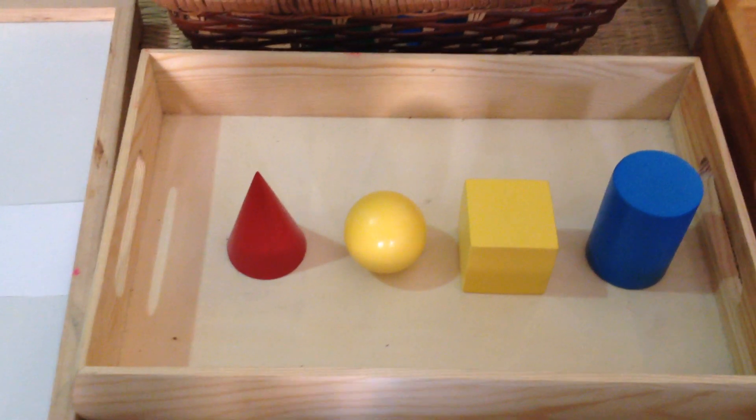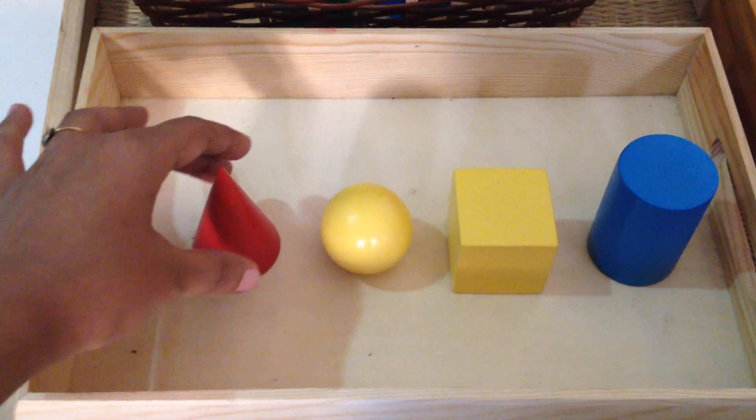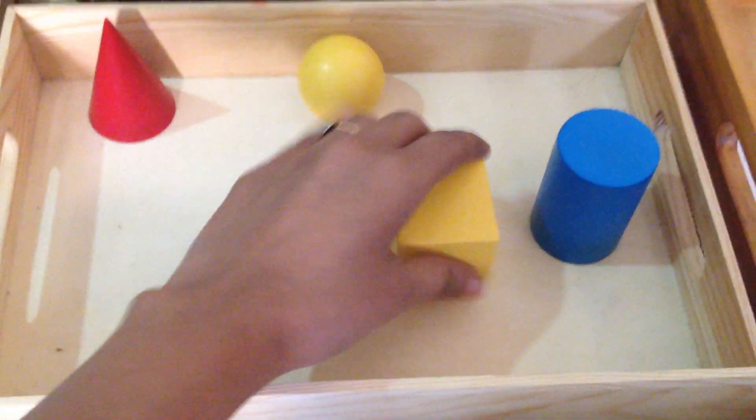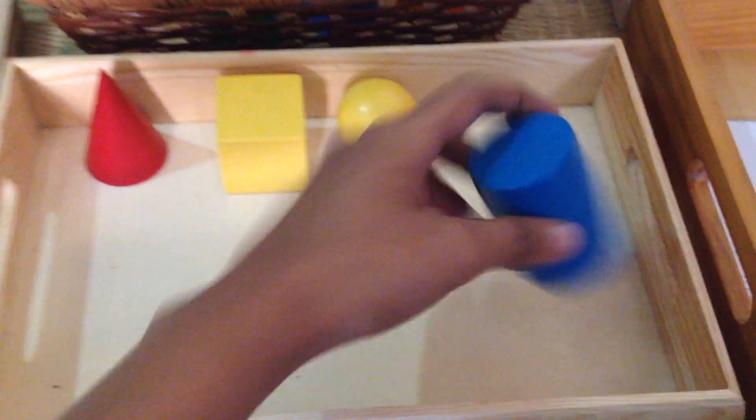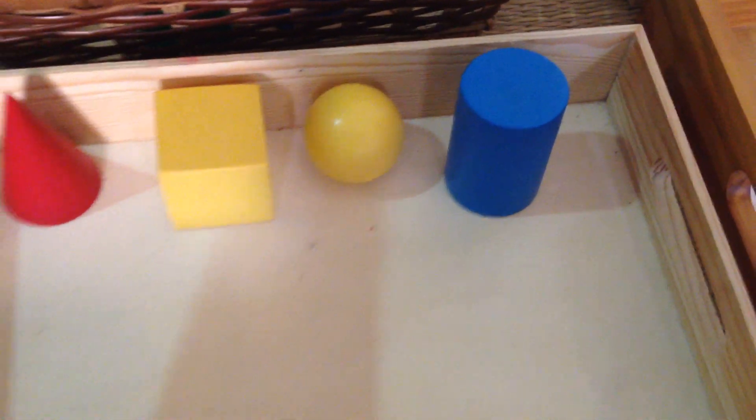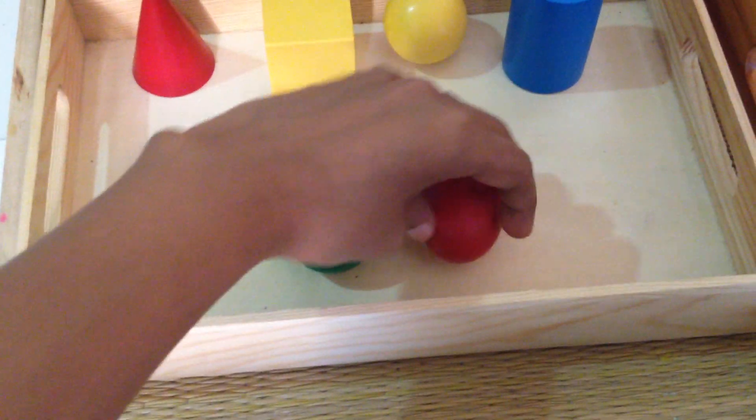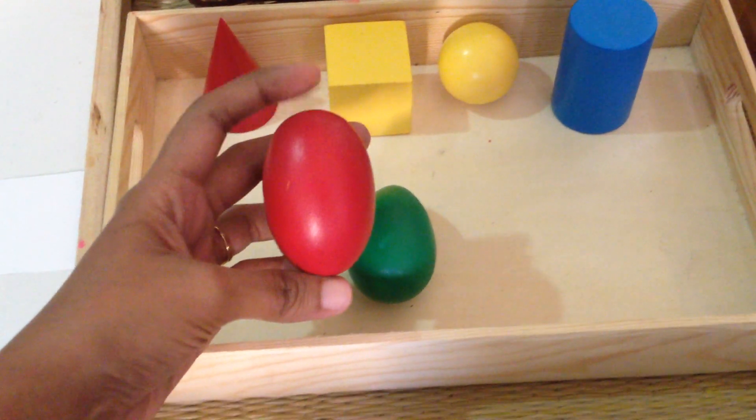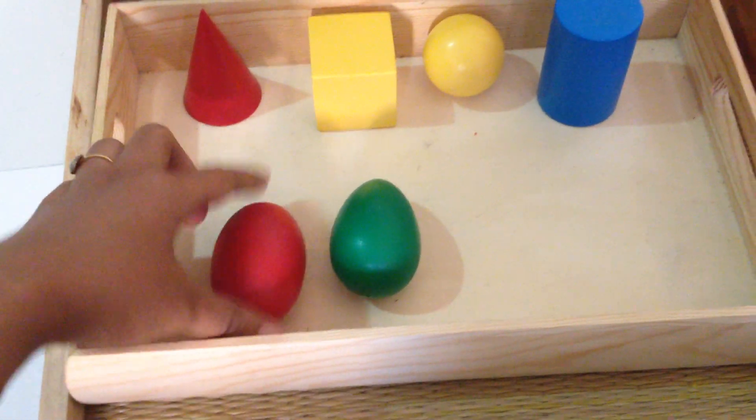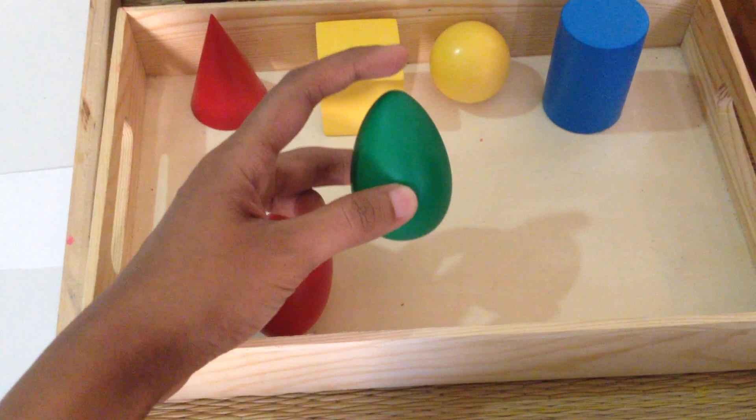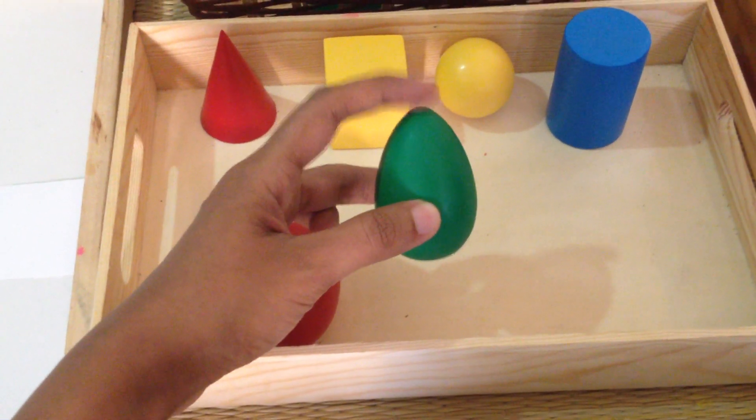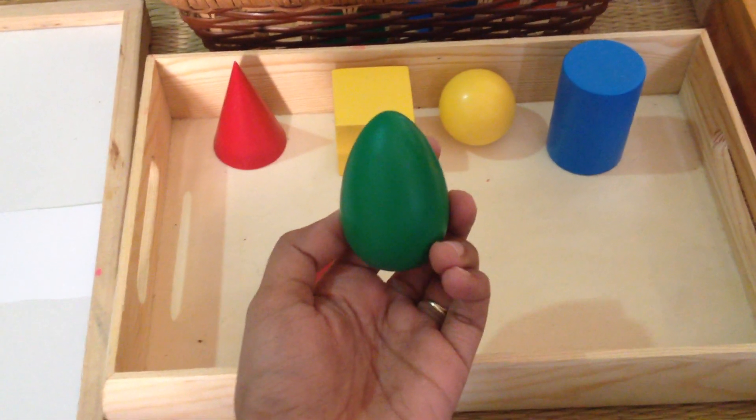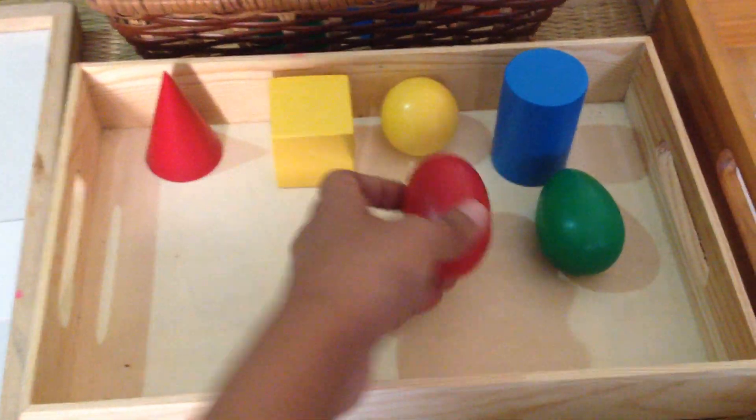I'm going to quickly tell you the names of each of the solids in case you just want it for reference. So this is a cone, it's a sphere, a cube, cylinder. Then you have these two which look very similar. This one, if you see, has both the ends same, so this is an ellipsoid. Whereas this is called an ovoid. It has got like a little tapering end here, so this is an ovoid as it resembles the shape of an egg.